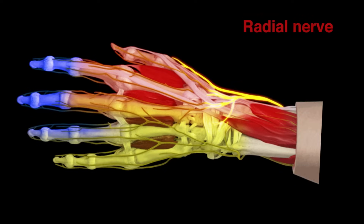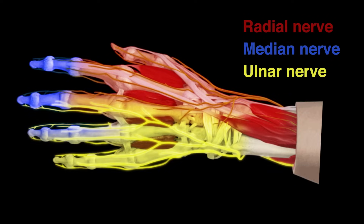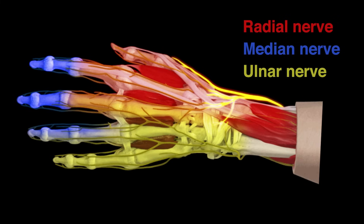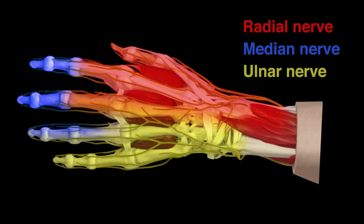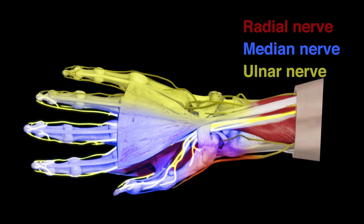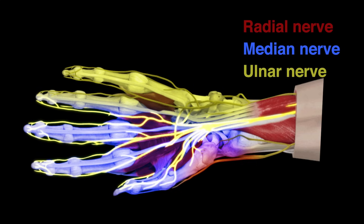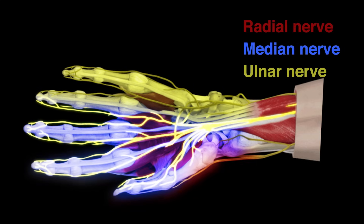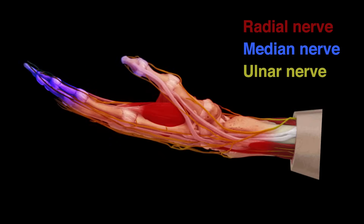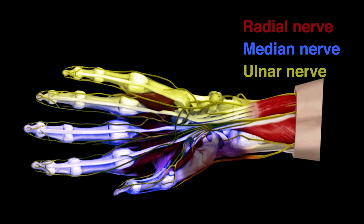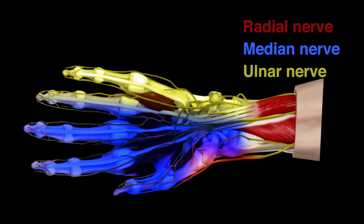Three nerves innervate the hand — the radial, median, and ulnar nerves. The superficial branch of the radial nerve divides into terminal branches at the wrist and provides sensation to the dorsal surface of the wrist, the radial styloid, and the anatomical snuff box. The sensory distribution of the radial nerve is shown in red. The median nerve becomes superficial near the wrist and lies beneath the flexor retinaculum in the carpal tunnel. The median nerve provides sensation to the thumb, the index finger, the middle finger, and half of the ring finger. The nerve does not innervate the dorsal aspect of the thumb or the corresponding area of the palm. The sensory distribution of the median nerve is shown in blue.